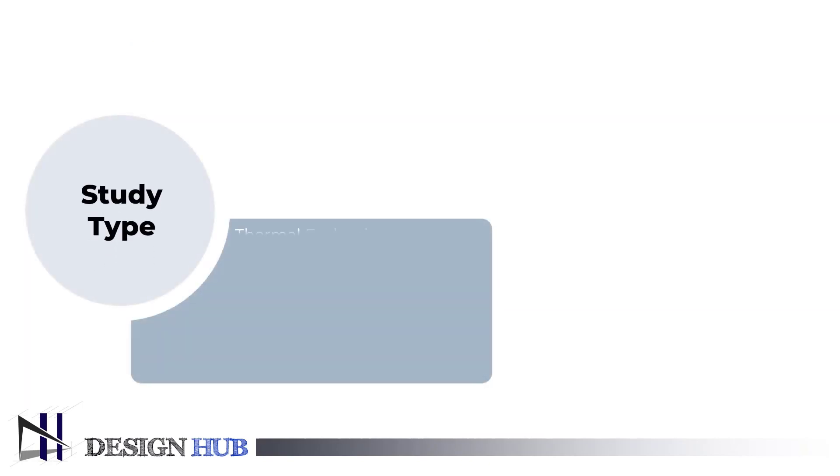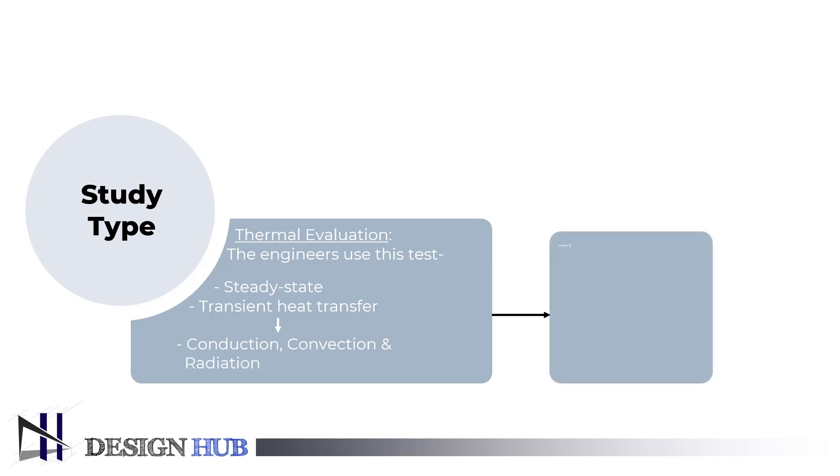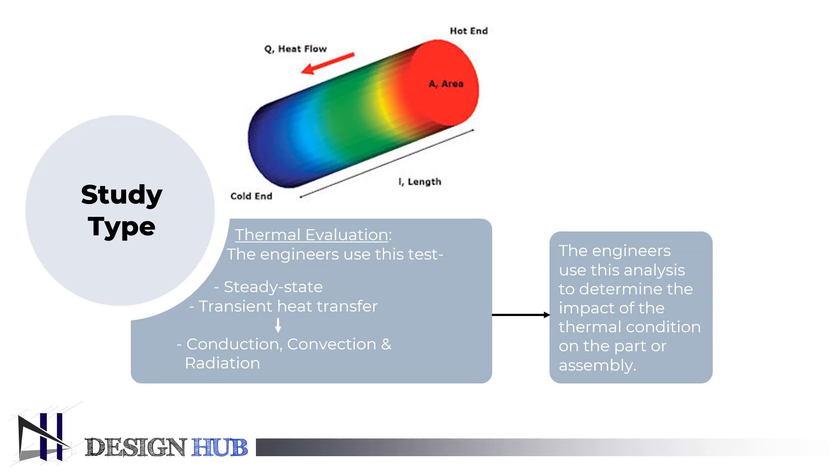The sixth study type is the thermal evaluation. Engineers can use this test as a tool to study and comprehend the steady state and transient heat transfer that occurs via conduction between components as well as through radiation and convection into the surrounding environment. To determine how the thermal conditions will impact the stress process and displacement in a part or assembly, the results of this analysis can be used in a stress analysis.